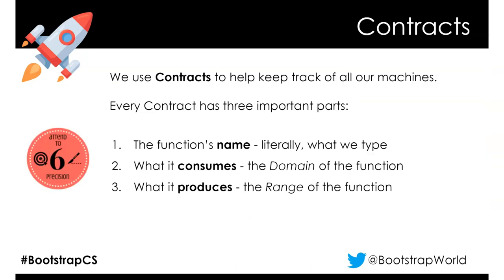In WeScheme we're going to use something called a contract to keep track of our machines. Since you are the machine maker, we have to know what we're going to make. We make mistakes when we're unclear on what we're asked to make - contracts help us get clarity. A contract has three important parts: the name (what we call the function), what goes in (the domain), and what comes out of the function.